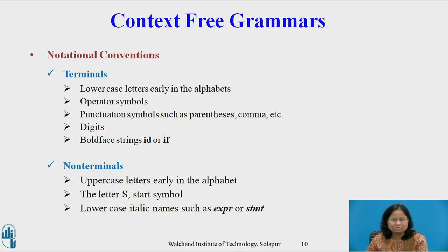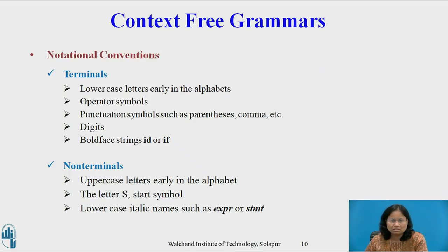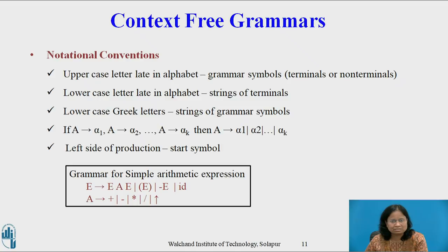Notational conventions. Terminals: lower case letters early in the alphabet such as a, b, c; operator symbols such as plus, minus, etc.; punctuation symbols such as parentheses, comma, etc.; digits 0 to 9; and boldface strings like 'id' or 'if' are terminals. Non-terminals: upper case letters early in the alphabet such as A, B, C; the letter S which is usually the start symbol; and lower case italic names such as 'expression' or 'statement'. Upper case letters late in the alphabet such as X, Y, Z represent grammar symbols — i.e., terminals or non-terminals. Lower case letters late in the alphabet such as u, v, x, y, z represent strings of terminals. Lower case Greek letters alpha, beta, gamma represent strings of grammar symbols.